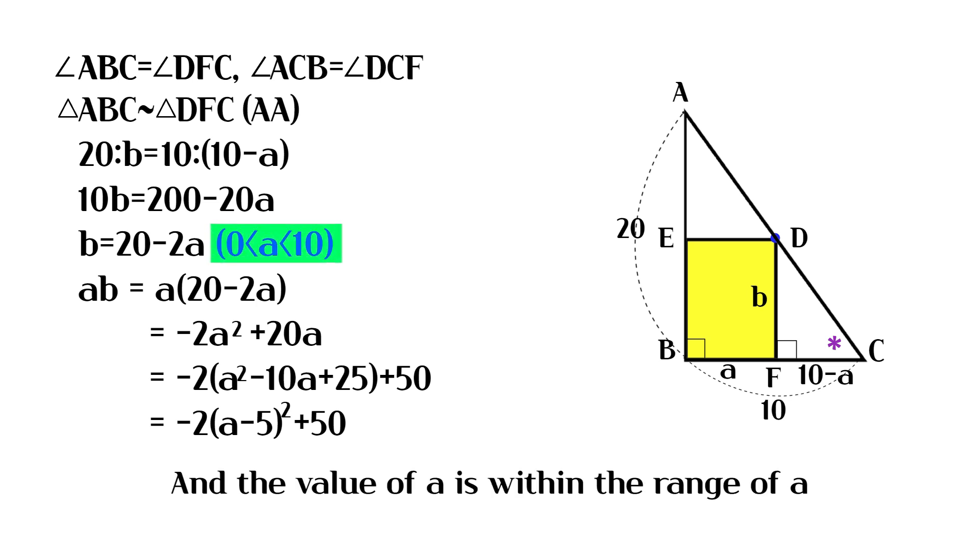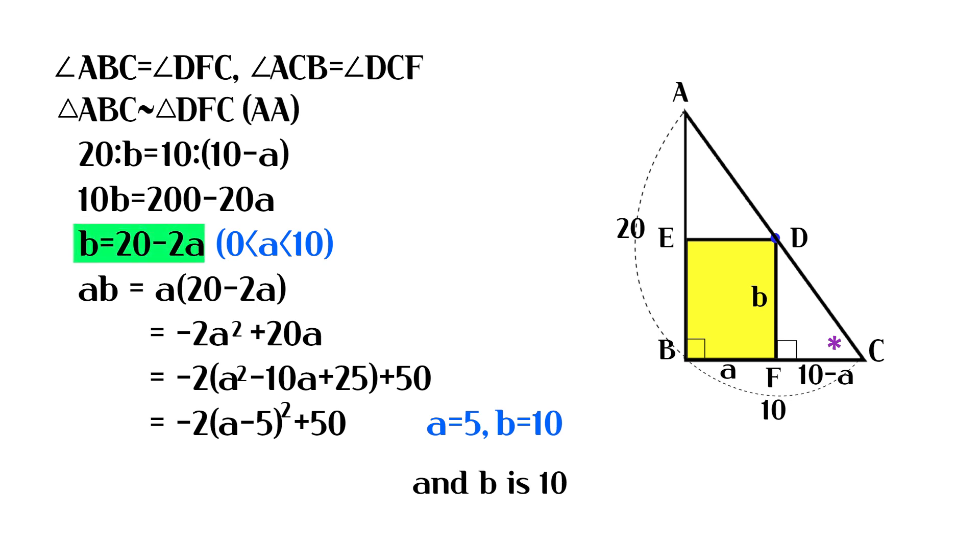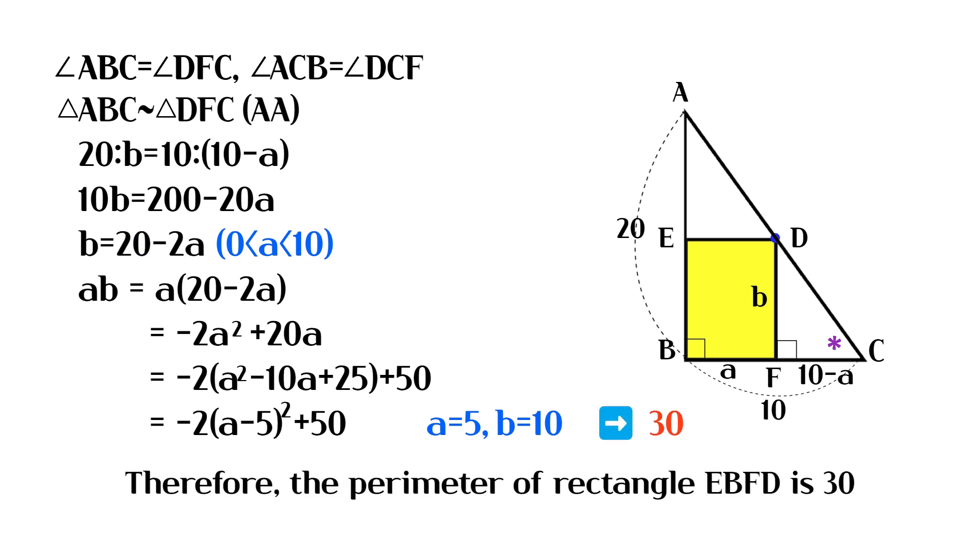And the value of a is within the range. So a is 5 and b is 10. Therefore, the perimeter of rectangle EBFD is 30.